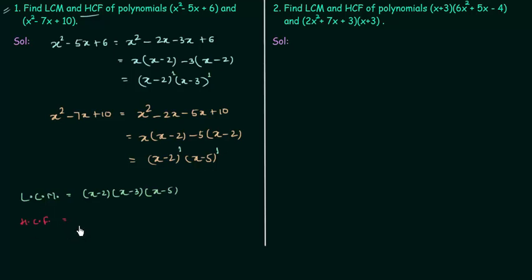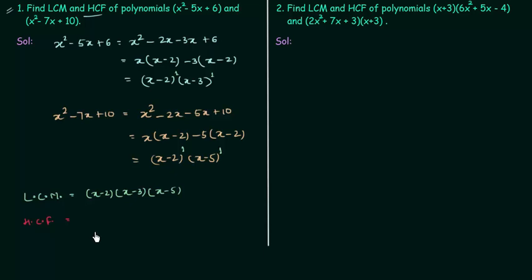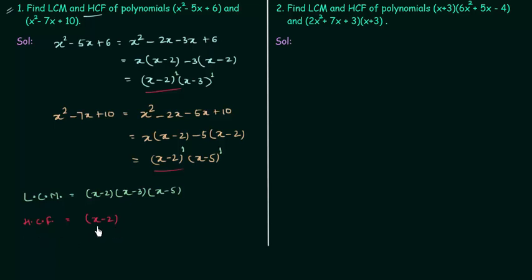HCF is equal to the product of common factors with the least index. In this case, (x - 2) is the only common factor, and its index is 1 in both polynomials. So the HCF is simply (x - 2). Therefore, LCM = (x - 2)(x - 3)(x - 5) and HCF = (x - 2). This is our answer.